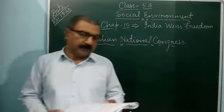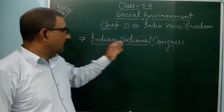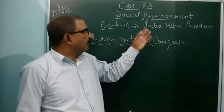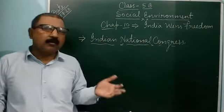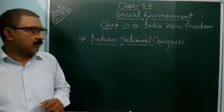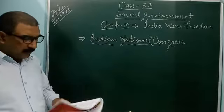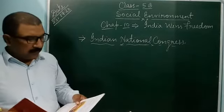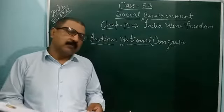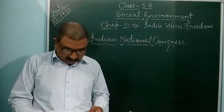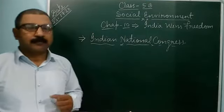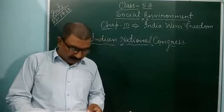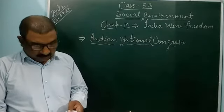Welcome, students. Today I am going to explain Indian National Congress in social science, chapters 9 and 10. You know already how India won freedom. Yesterday I explained the revolt of 1857. After the failure of the revolt of 1857, new ideas came and new reckoning came through two different ways — through religious and social bodies. Different people established different types of missions and social institutions.